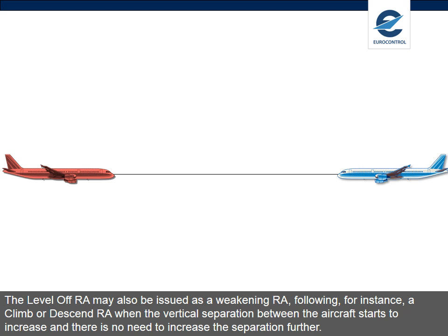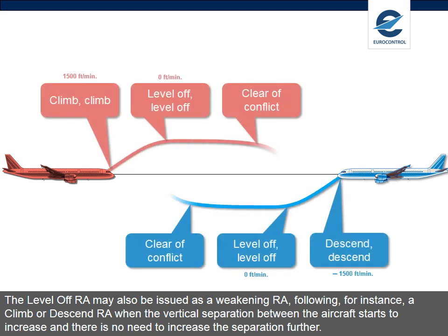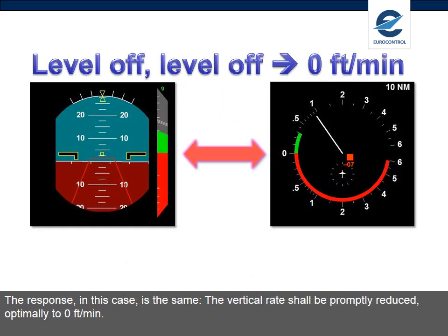The Level Off RA may also be issued as a weakening RA, following, for instance, a climb or descend RA when the vertical separation between the aircraft starts to increase and there is no need to increase the separation further. The response in this case is the same. The vertical rate should be promptly reduced, optimally to 0 feet per minute.